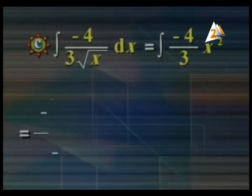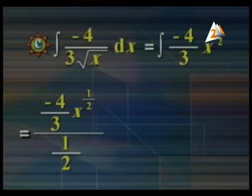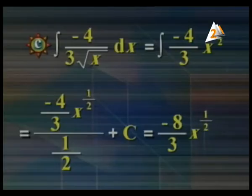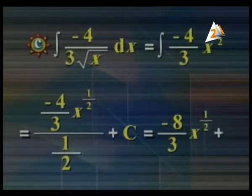So the integral of negative 4 over 3 times x^(-1/2) dx: we add 1 to the power and divide by the new power. This gives negative 4 over 3 times x^(1/2) divided by 1/2, plus c. The final answer is negative 8 over 3 times x^(1/2) plus c.